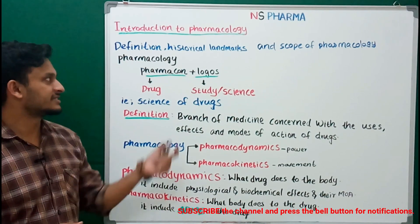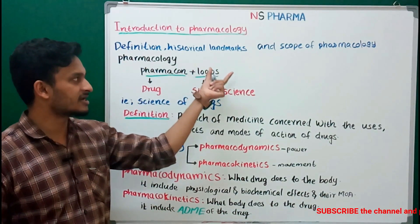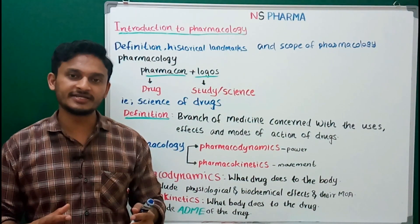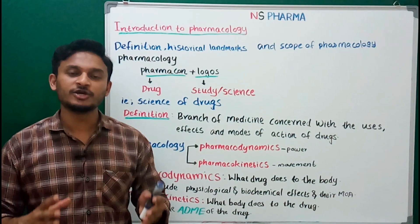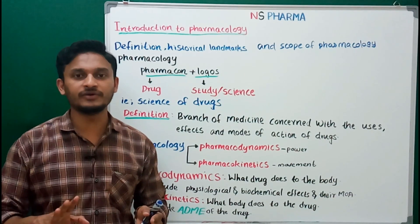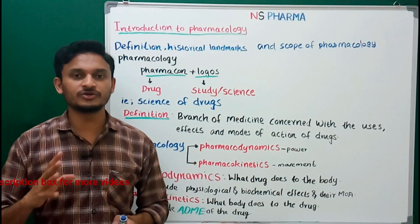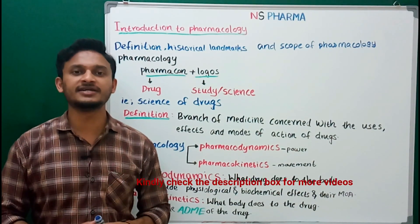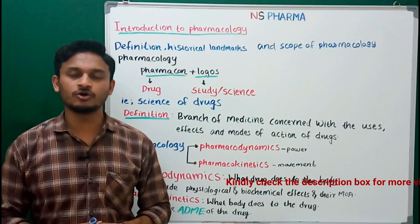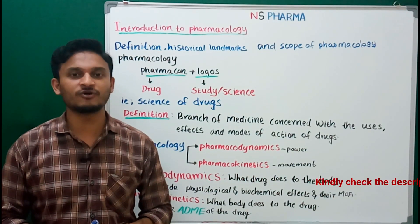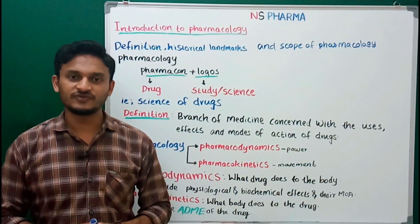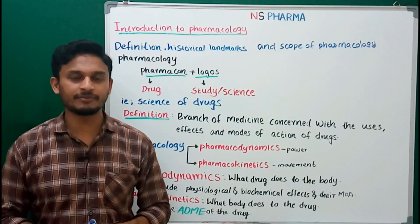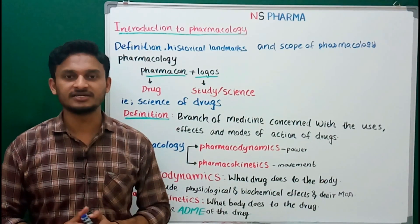First we will see the definition, then historical landmarks, then in the last, scope of pharmacology. Before going into details, in your semester 4, you have to study a total of 5 units in pharmacology. The first two units belong to general pharmacology. In the third unit, you study drugs acting on the peripheral nervous system. The fourth and fifth units cover drugs acting on the central nervous system.